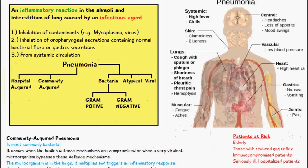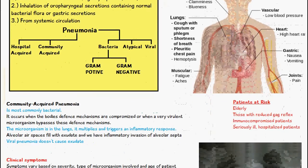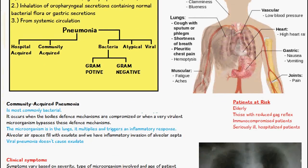When talking about community-acquired pneumonia, it's most commonly bacterial and it occurs when the body's defense mechanisms are compromised or when a very virulent microorganism bypasses the body's defense mechanisms. Once the organism is in the lungs, it's going to multiply and trigger an inflammatory response by the body, and this is where we have the symptoms of pneumonia.